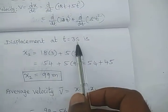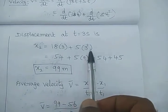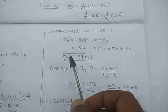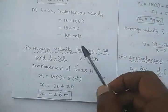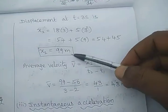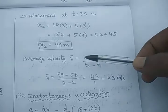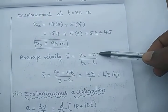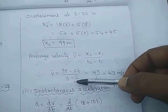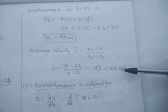Similarly, at t equals 3 seconds, x2 equals 18 times 3 plus 5 times 3 squared, giving 54 plus 45, so x2 equals 99 meters. The average velocity is change in displacement divided by change in time: 99 minus 56 divided by 3 minus 2 equals 43 meters per second.